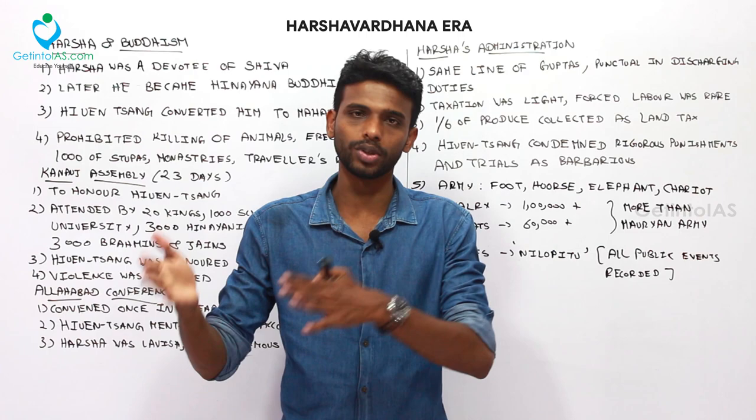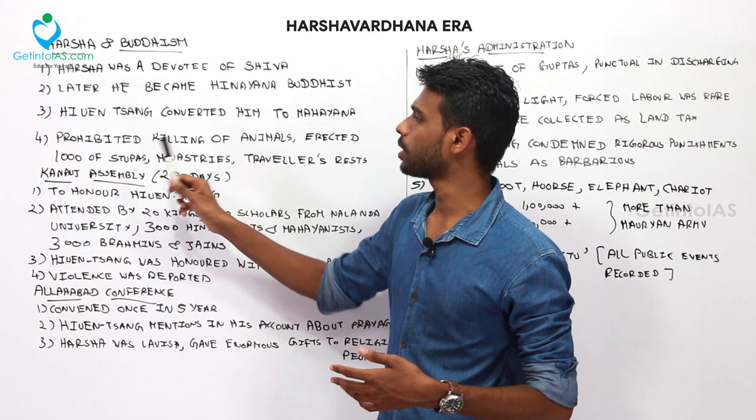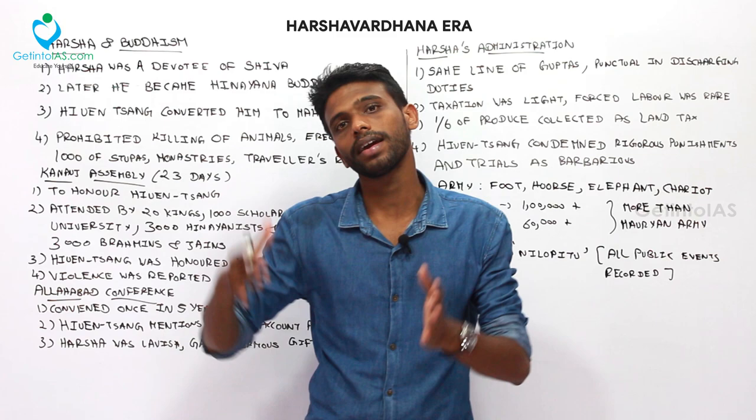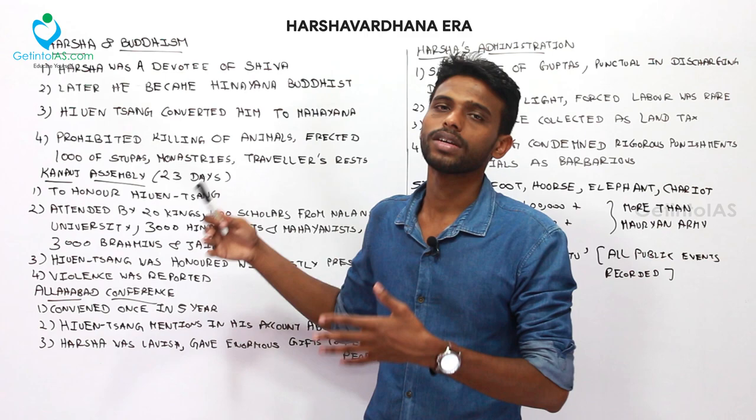After Harsha became a Buddhist, he prohibited the killing of animals. He also erected thousands of stupas, monasteries, and travelers' rests. Like Ashoka, he supported Buddhism and constructed monasteries, chaityas, and viharas. He followed the same pattern as other emperors who patronized Buddhism.